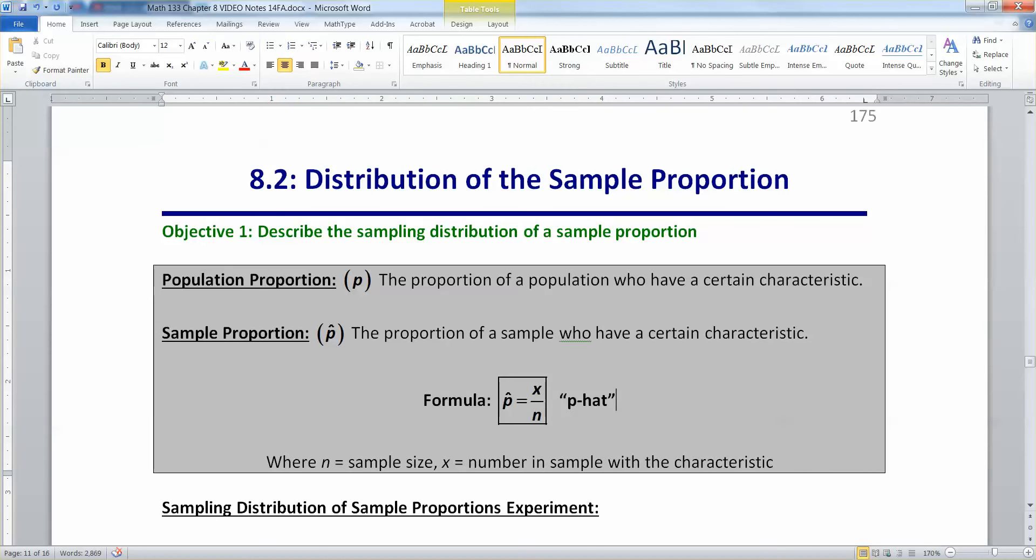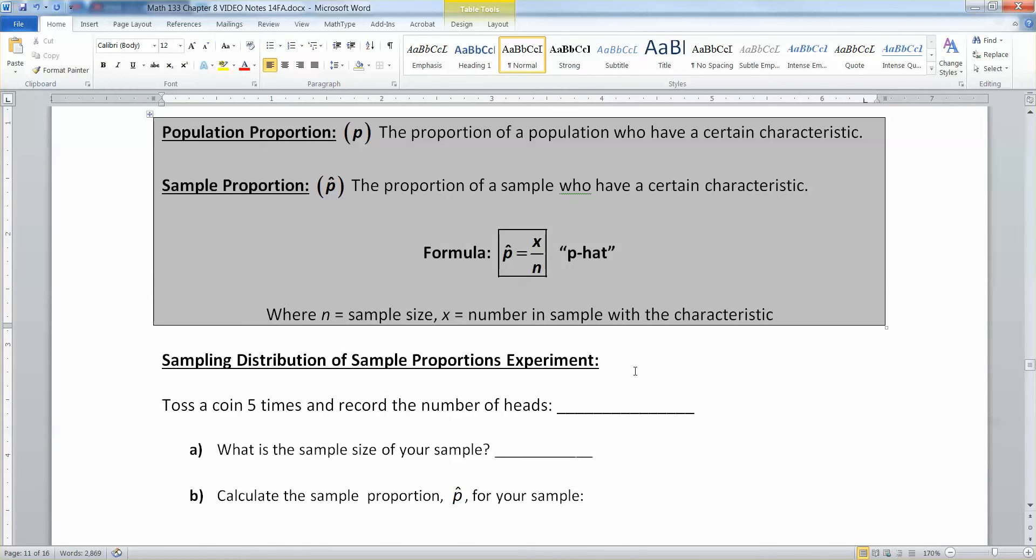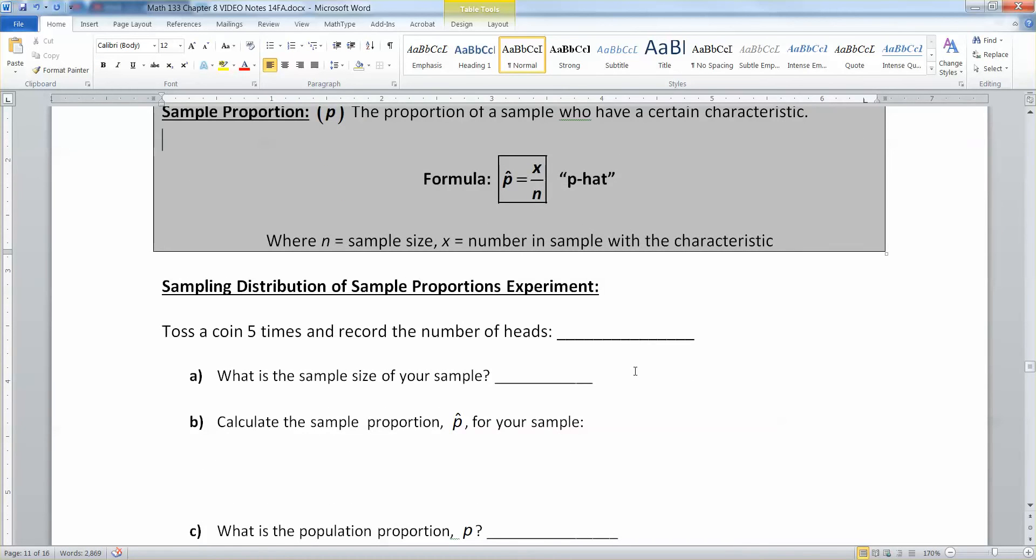So we're going to experiment with this just a little bit. I have a coin in my hand. You can't see it. And I'm going to toss this coin five times and record the number of heads that I get. Two. So I got two heads out of five.